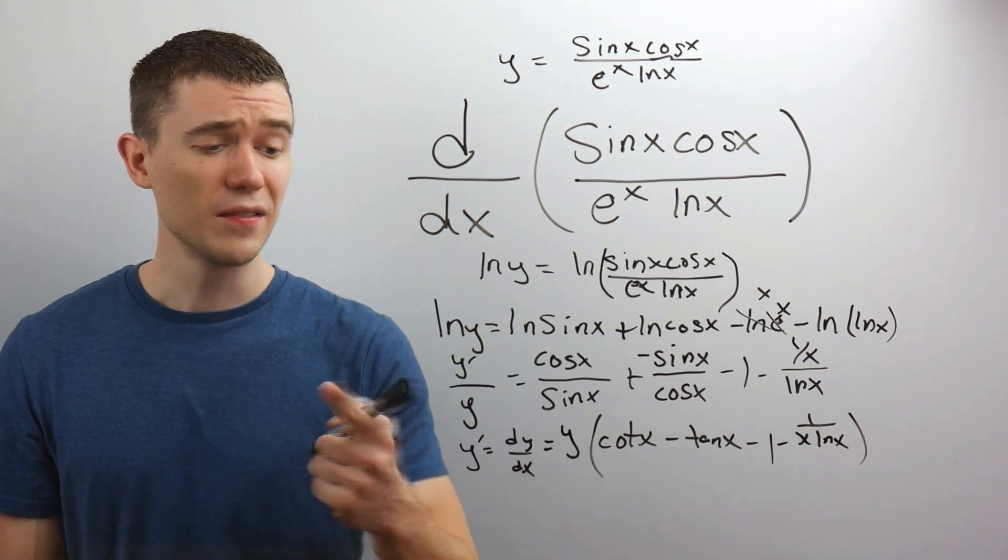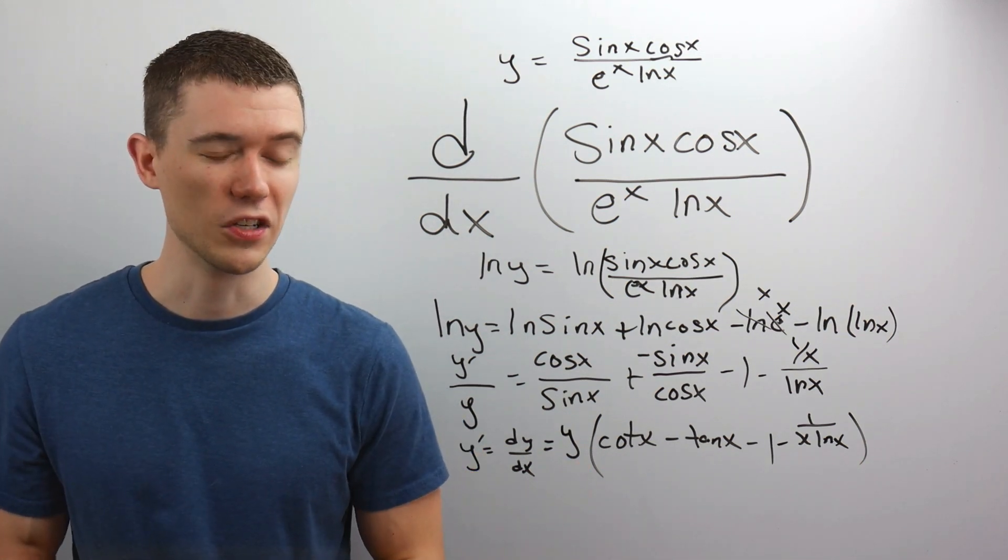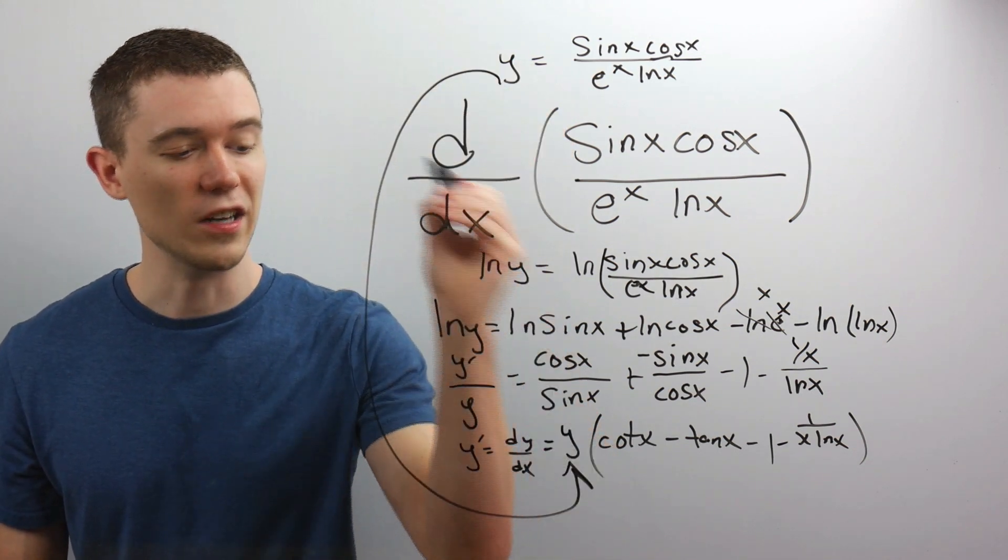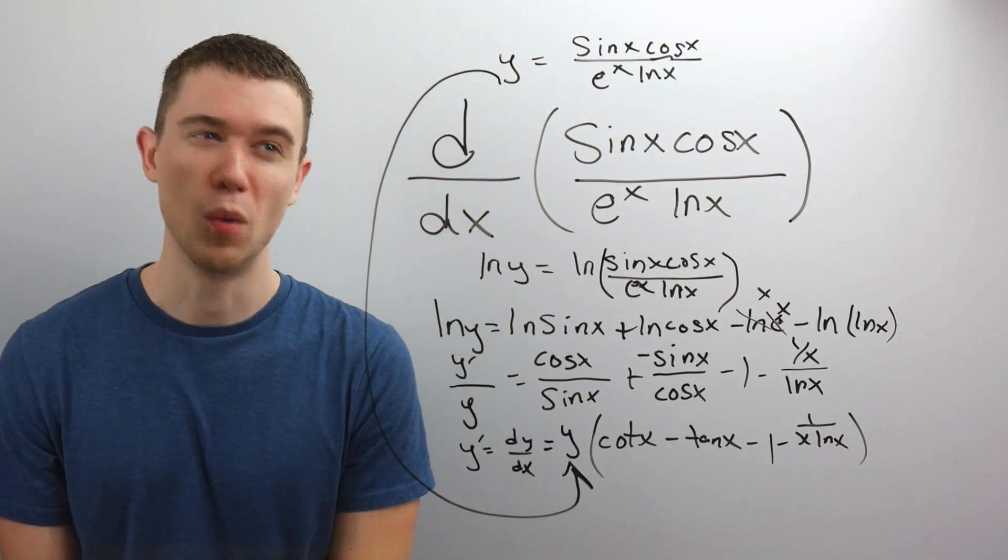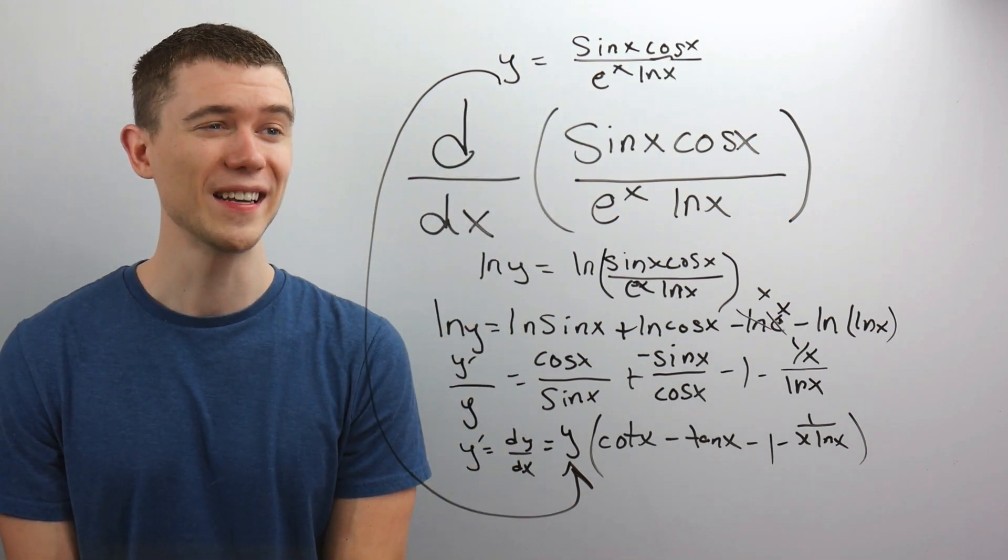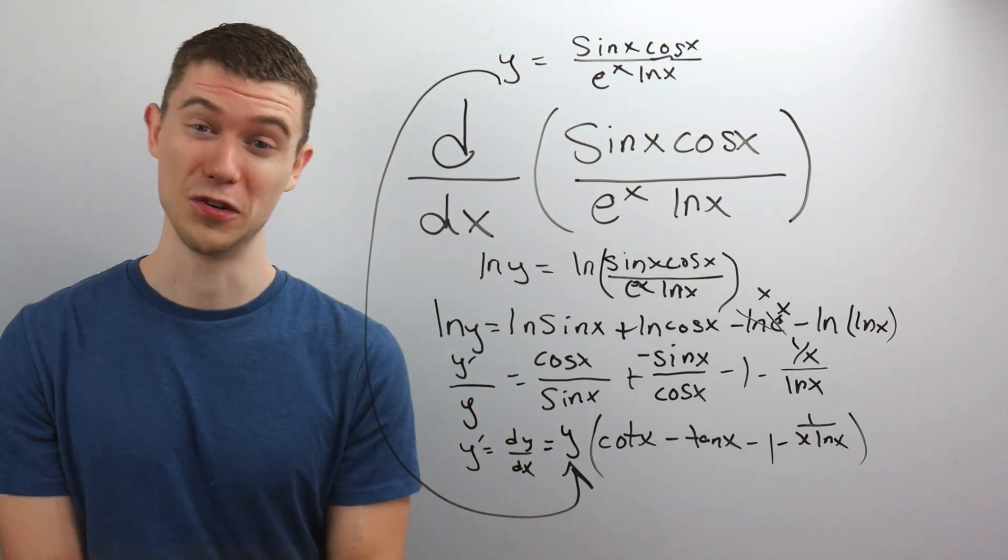And instead of saying y times this, it'd be nice if we just had our entire equation in x. So I'm not going to do it. But you can just take this y and just replace it with what we know y to be. This entire sine x cosine x over e to the x lnx. That entire mess should be our derivative.